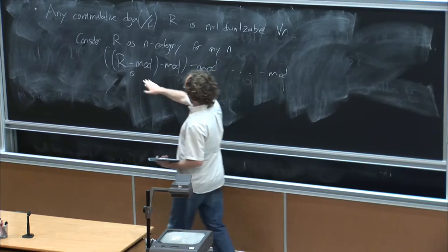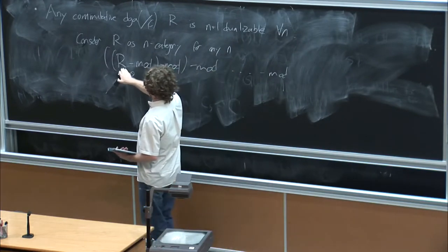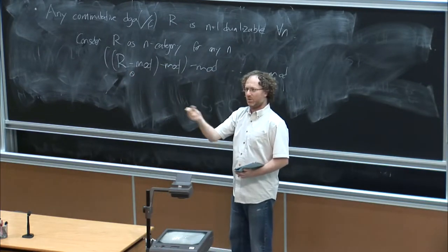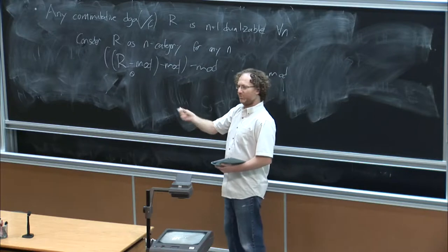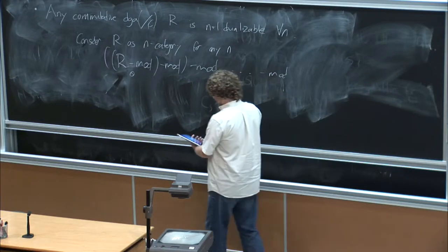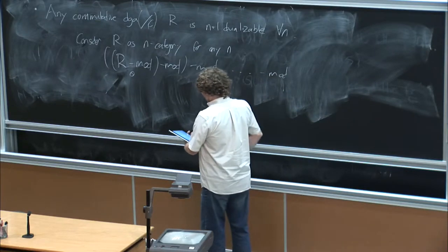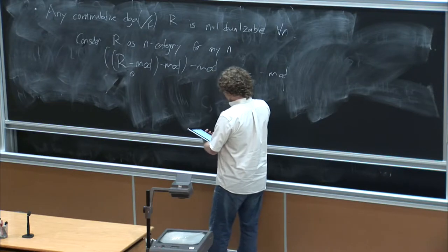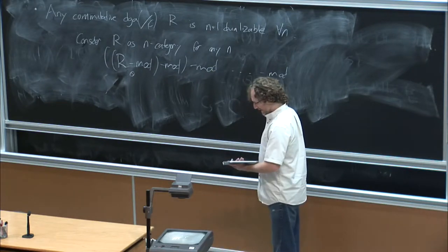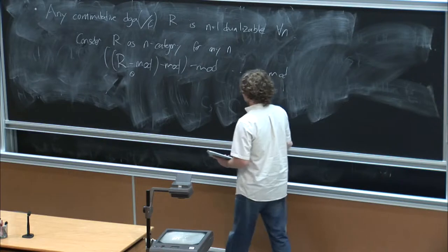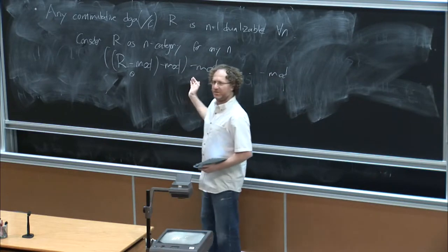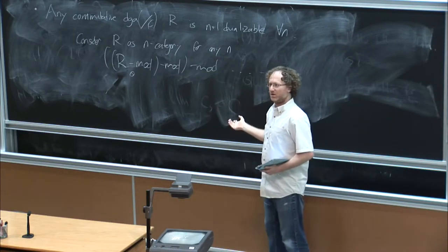I would rather think of it as an n-category that's generated by a single object, a single one-morphism, and so on, and a bunch of n-morphisms. So the claim is that this construction is dualizable for any n. And what is the field theory? This is something that already appeared in Bertrand's talks.